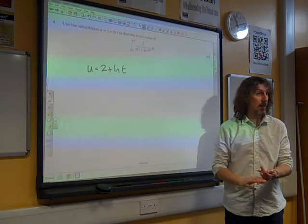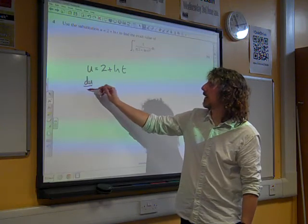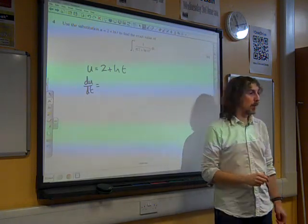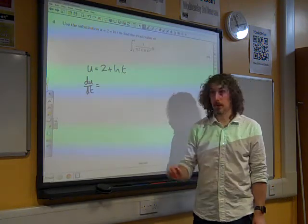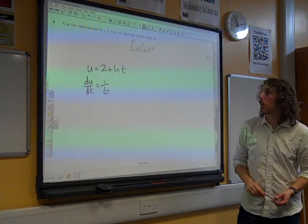So we'll start with that and see where it leads us. Because u is 2 + ln t, if we differentiate that, du by dt gives us - well, if we differentiate natural log of t, we get 1 over t, don't we? So du by dt is 1 over t.